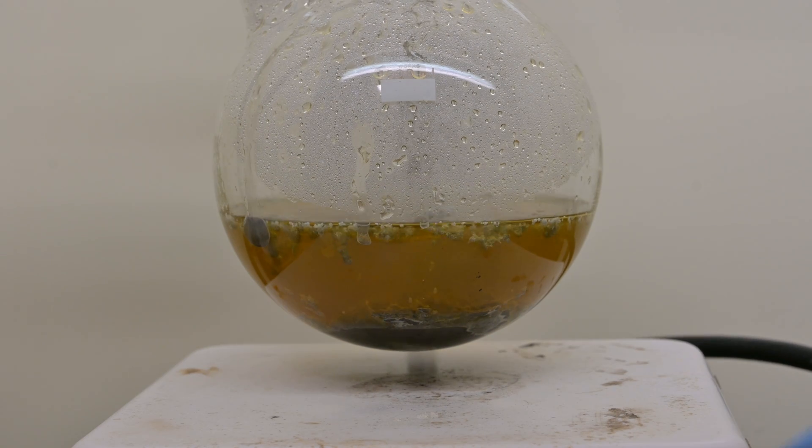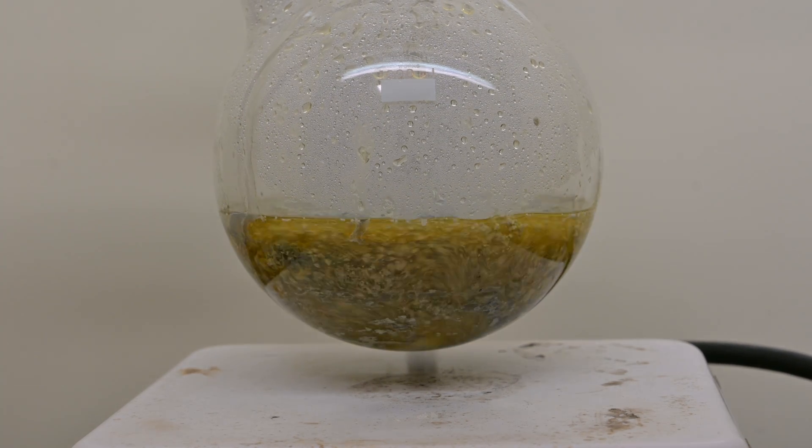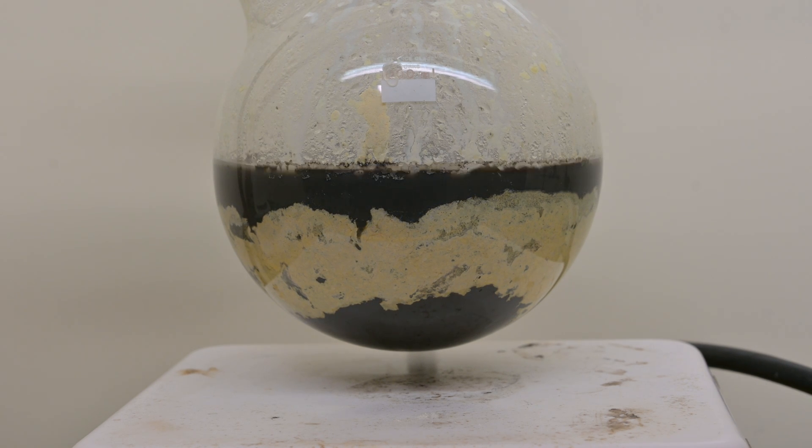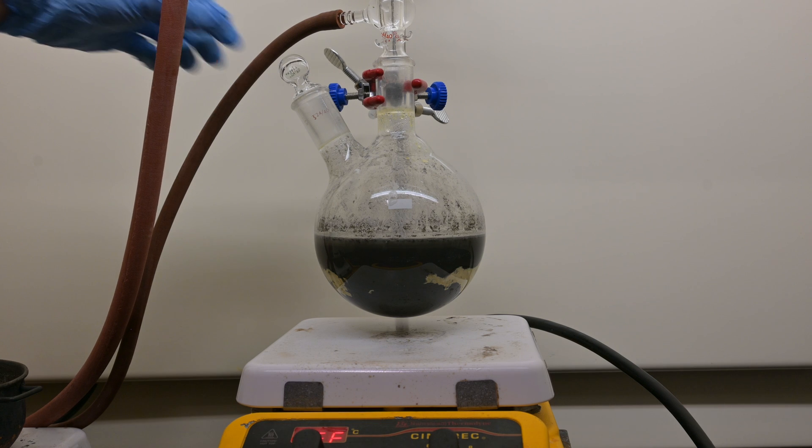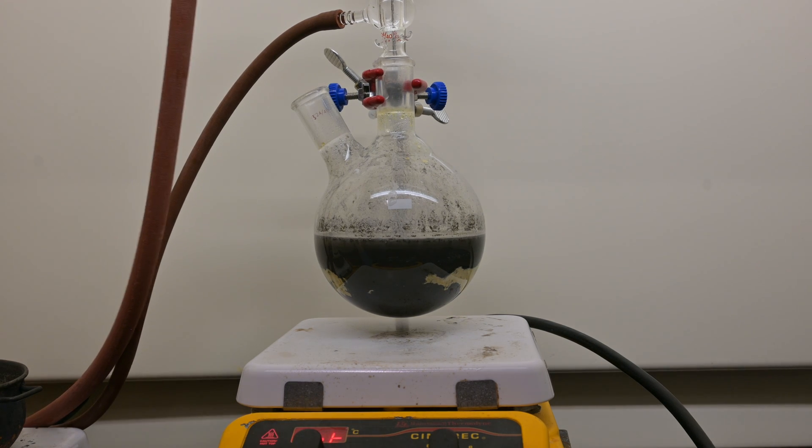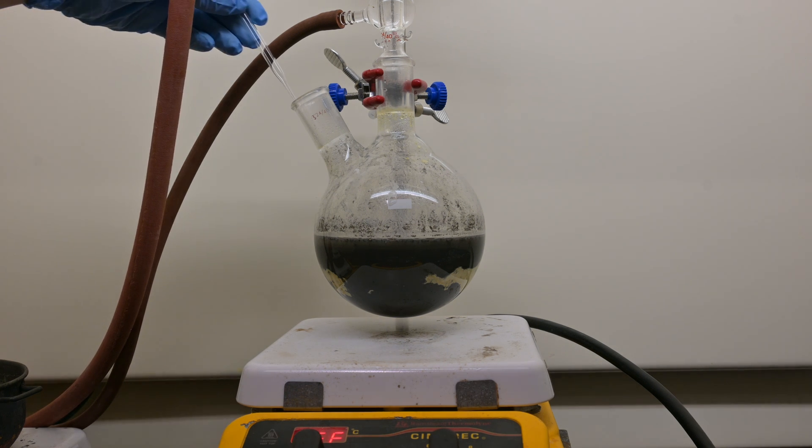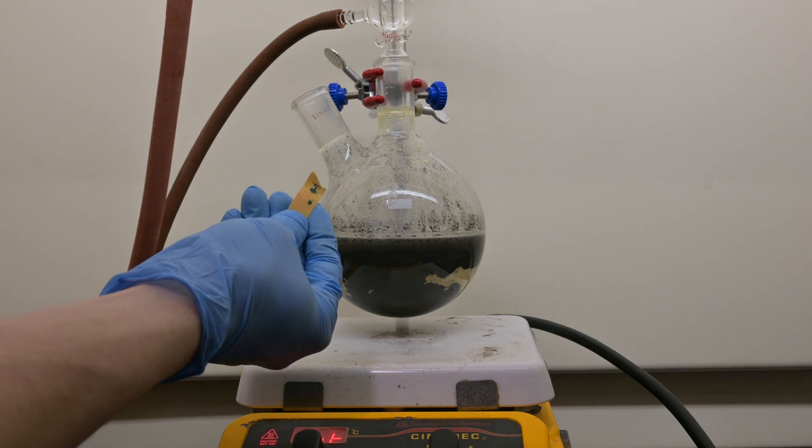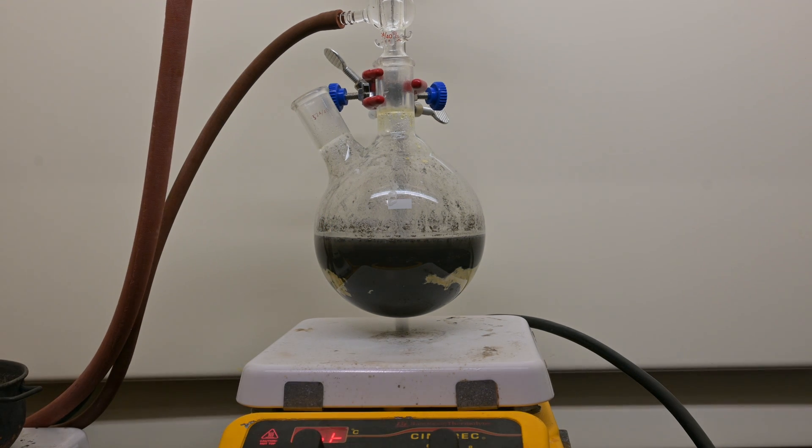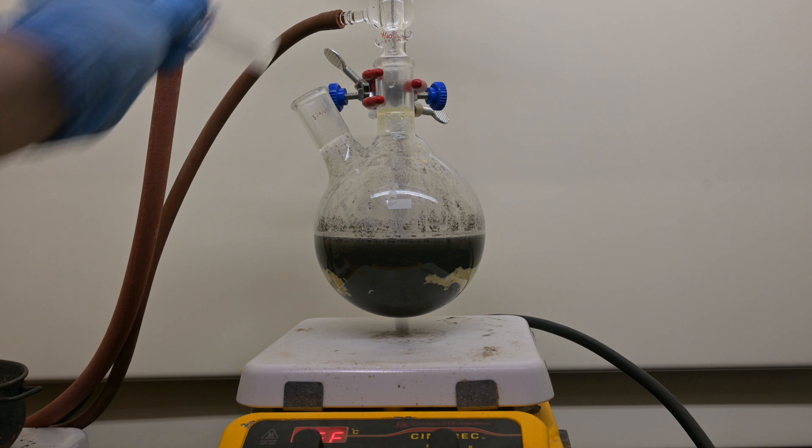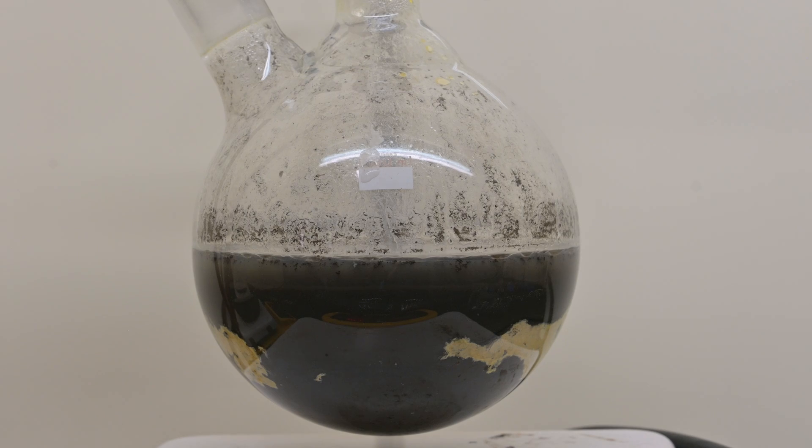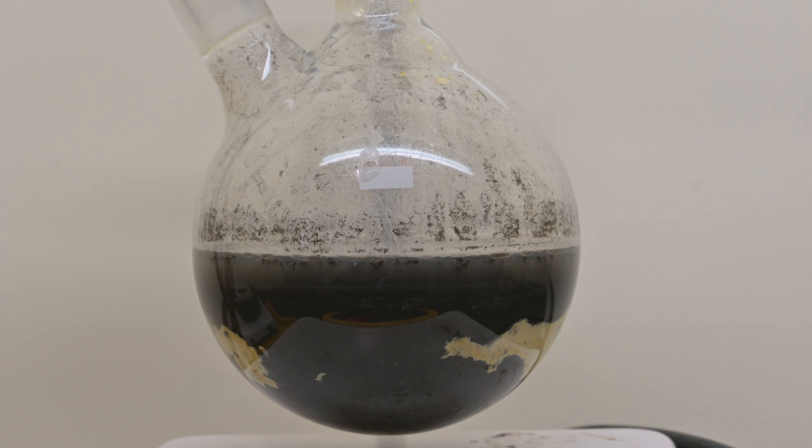After, we gradually add a solution made up of 90 grams of sodium hydroxide in 150 cc of water, until the precipitate dissolves. The solution should be strongly alkaline at this point. We use some pH paper to test the solution.